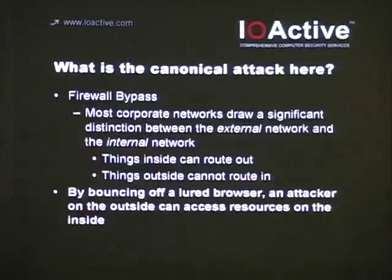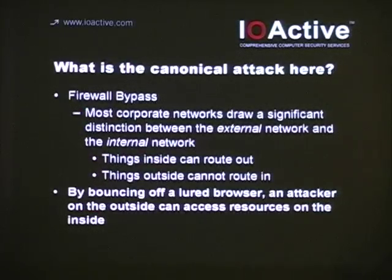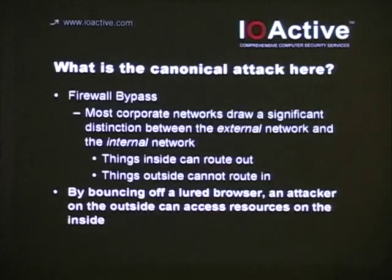What happened is that for load balancing purposes, we created a dependency on insecure behavior. This sucks. So the canonical attack is actually getting around a firewall. Firewalls are remarkably effective — they've done huge amounts of good in limiting server attack surface. It's what's driven attackers to the clients. The model is you bounce off a lured browser — say, a user just viewing an ad on a web page — and the attacker on the outside bounces off the browser and hits internal corporate resources.